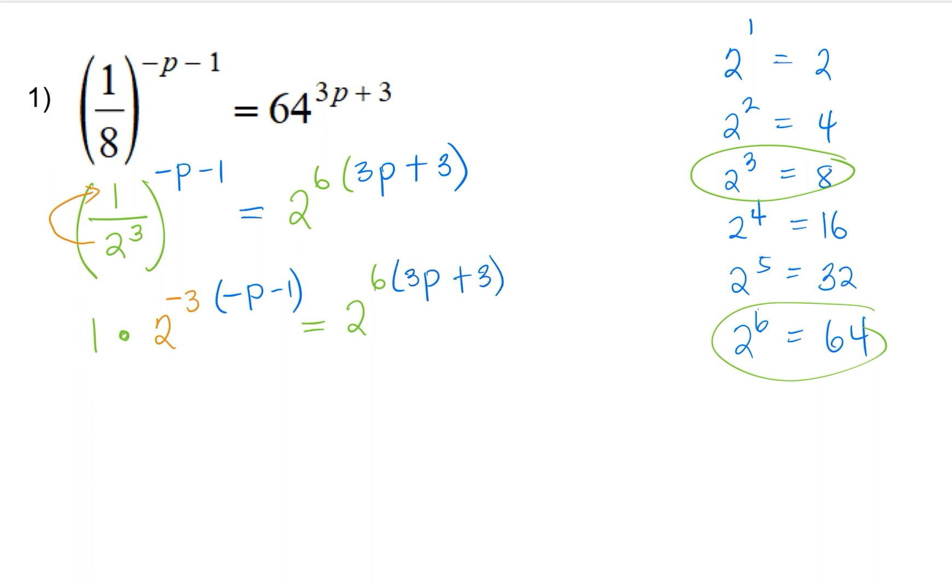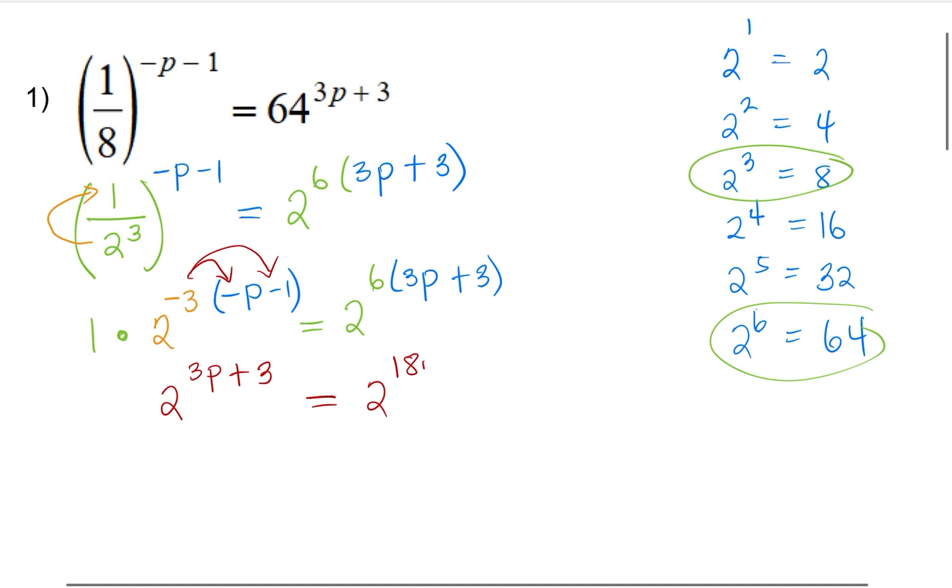So again, our first goal is to make the base the same. So we can start distributing. So we'll have 2 to the power, we distribute 3 times negative p is positive 3p. And then that would give us positive 3. On the right side, that will be 2 to the power 18p plus 18.